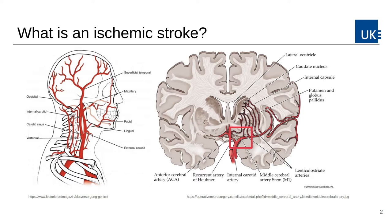To visualize and assess the stroke, a digital subtraction angiography (DSA) is performed, where the obstructed artery is injected with contrast agent while a time series of x-ray images are recorded. After subtracting the first frame from every other frame, one is left with only a video of the distribution of contrast agent and hence blood in the considered blood vessels.